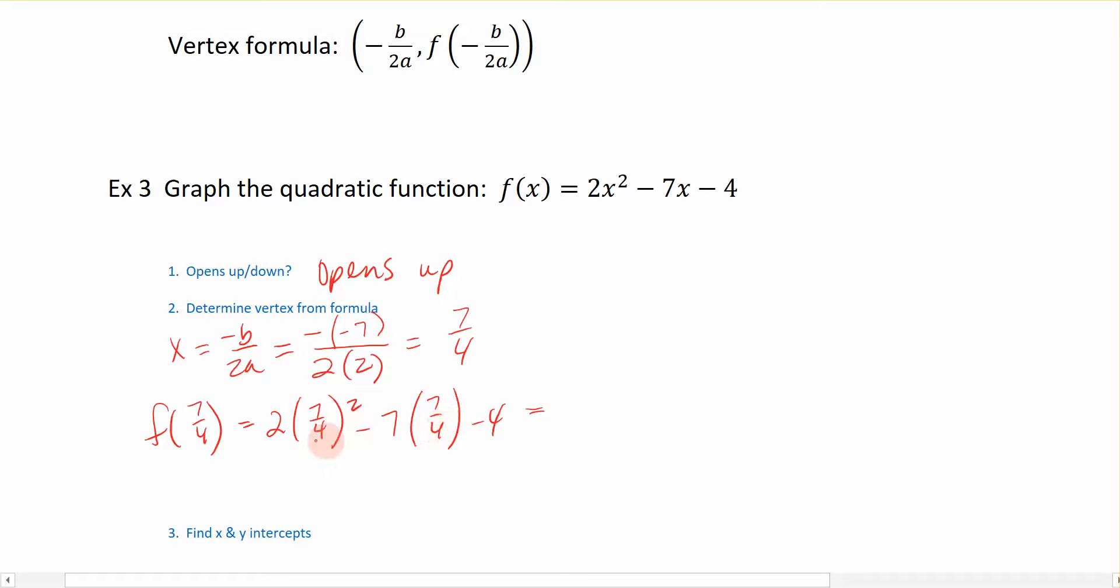This is written in function notation. I am going to evaluate my function for x equals 7 fourths. When I evaluate a function, I go back in and replace all of the x's with 7 fourths to determine what the value of that function is. So f(7/4) equals 2 times (7/4)² minus 7 times 7/4 minus 4. I'm going to simplify this to get a reduced fraction for an exact answer. I want to know what the exact answer is in case that's the answer being asked for on the computer.